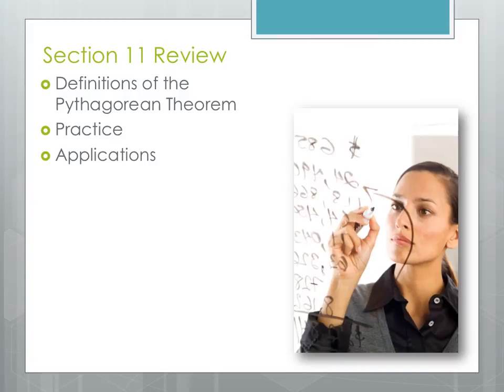That's it for our last lesson of DMA 10. To review, in section 11 we covered the definition of the Pythagorean Theorem, did some practice both with finding unknown lengths and determining whether or not a triangle is a right triangle, and then looked at an application problem. Good luck with your work on section 11, DMA, and your upcoming final exam. Take care.